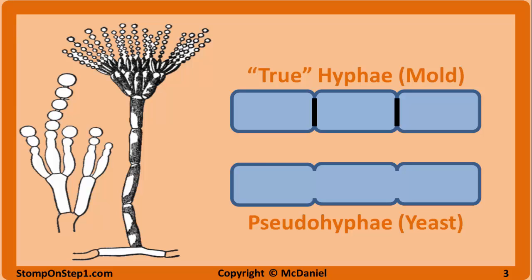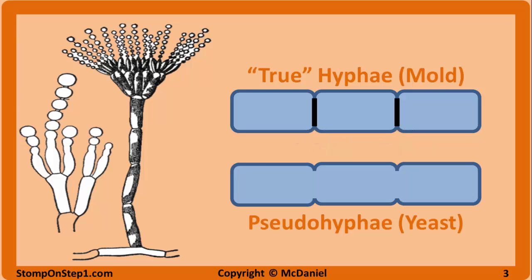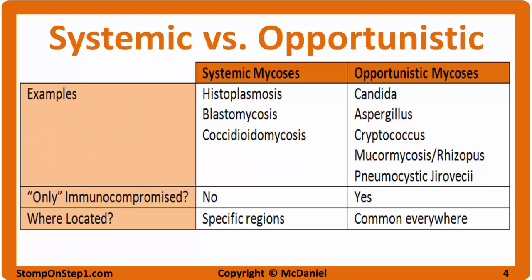Both hyphae and pseudohyphae are branching filamentous vegetative structures of fungi and each forms spores. True hyphae have septae or cell walls between sections, while pseudohyphae are formed by budding without a true cell wall between sections. The high-yield fungal infections can primarily be broken down into two groups: systemic and opportunistic.